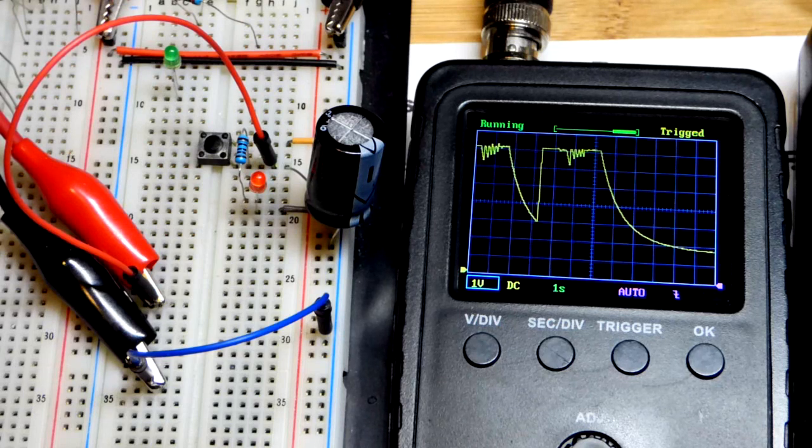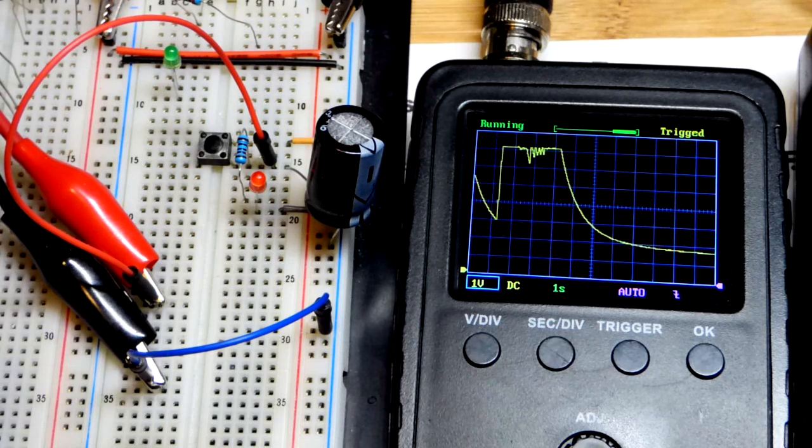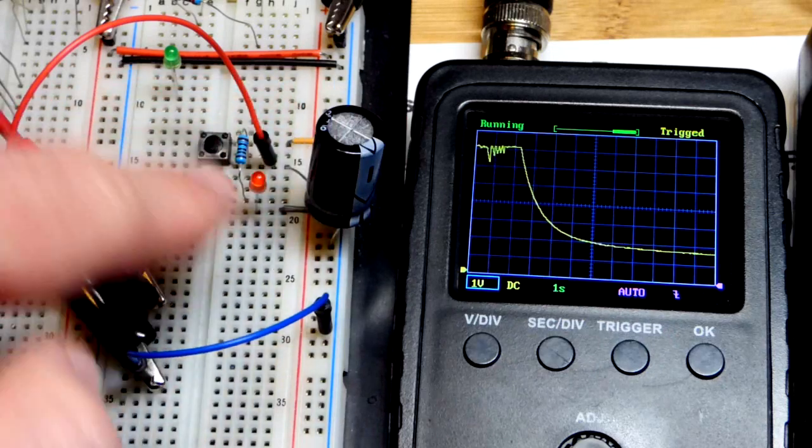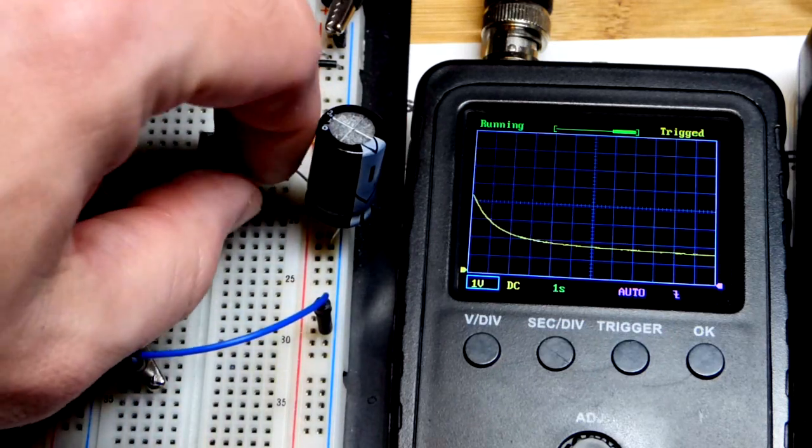Now of course you can see that with the red LED, it stops discharging because it can't discharge through the LED. There's no current flow or anything.